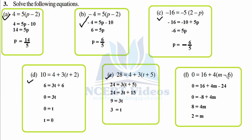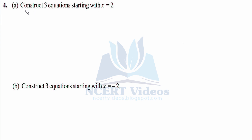Part f: 0 equals 16 plus 4 times (m minus 6). Open the bracket: 0 equals 16 plus 4m minus 24. Simplify: 16 minus 24 is minus 8, so 0 equals minus 8 plus 4m. Transpose minus 8 to the left: 8 equals 4m. Divide both sides by 4, so m equals 2.